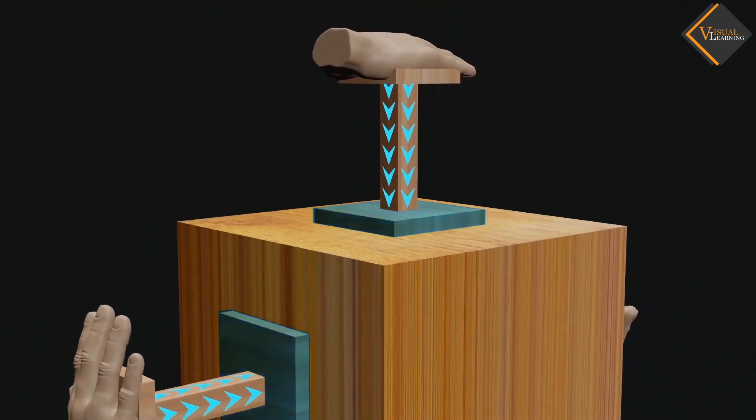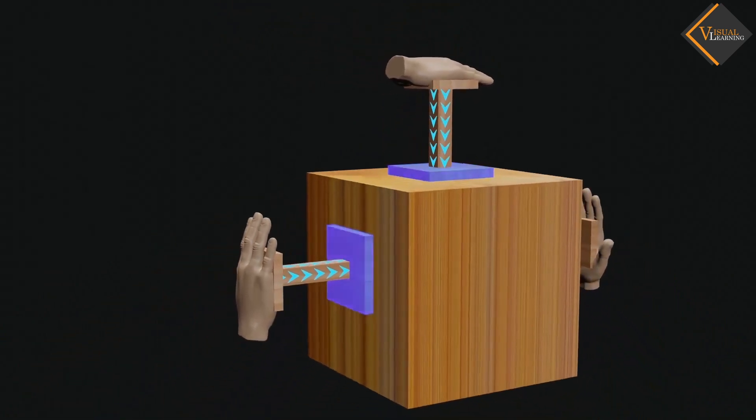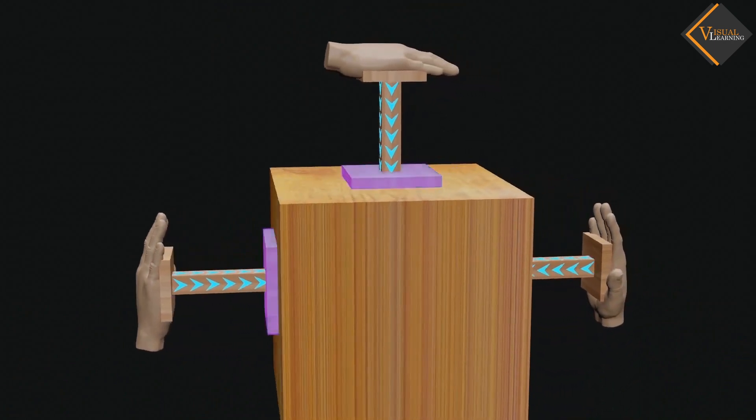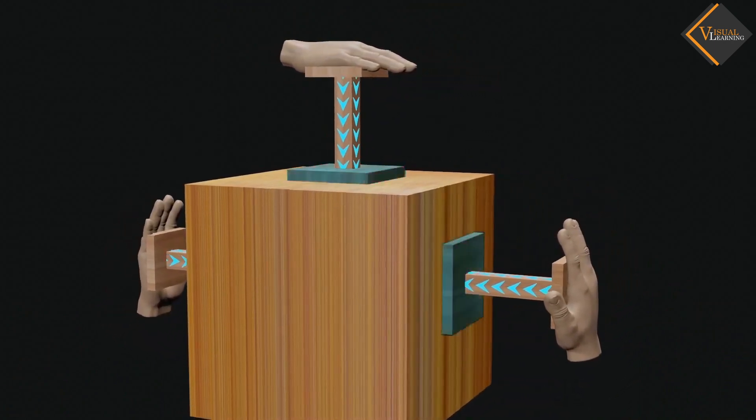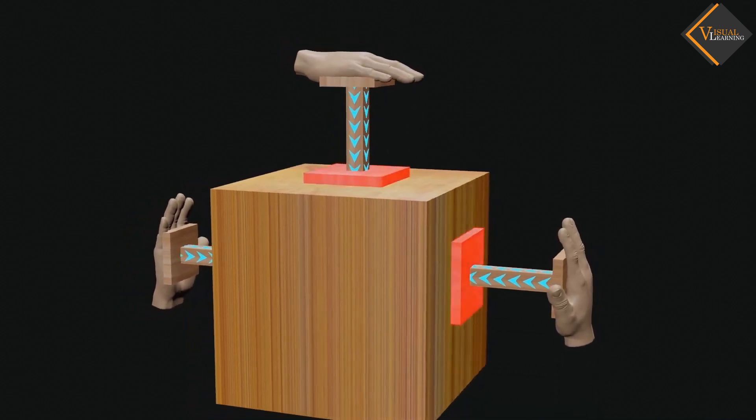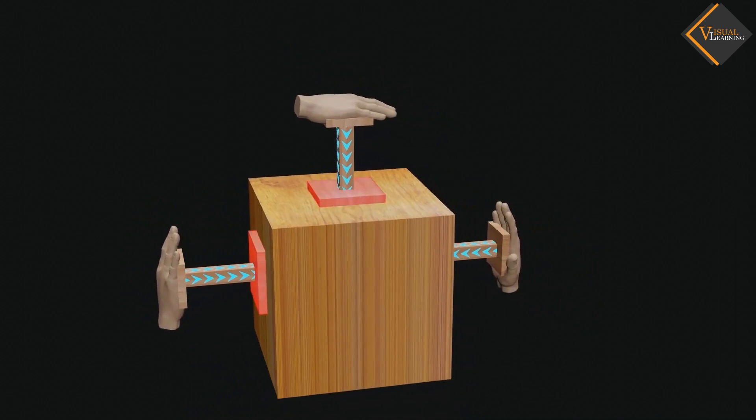If we change the position of the wooden block and apply the same force, then the force will act in the same way as the last one, perpendicular to the surface. This perpendicular force acting on the surface is called thrust.